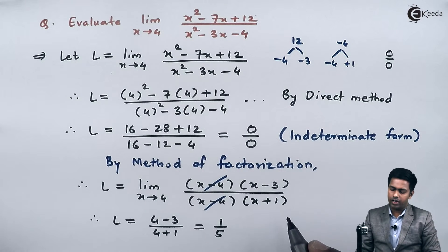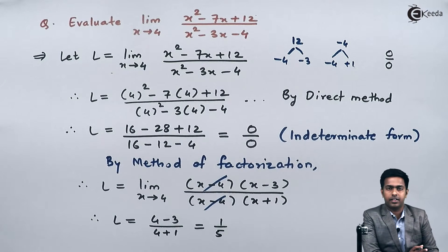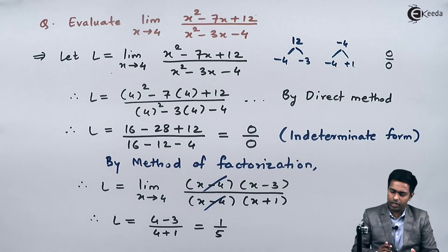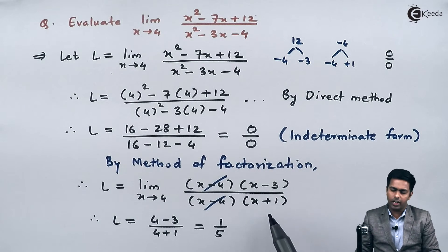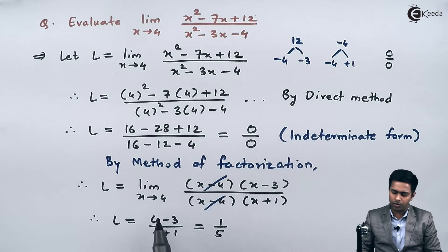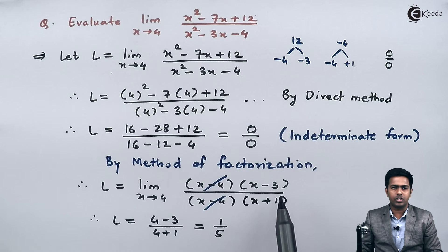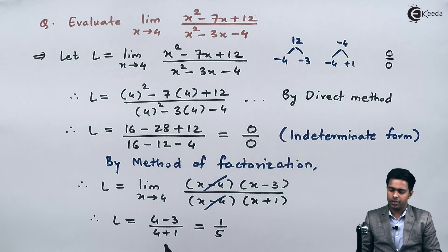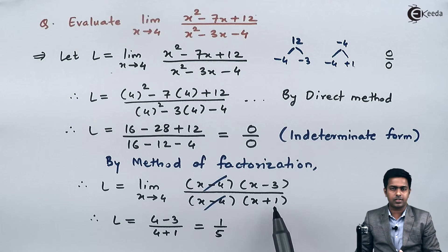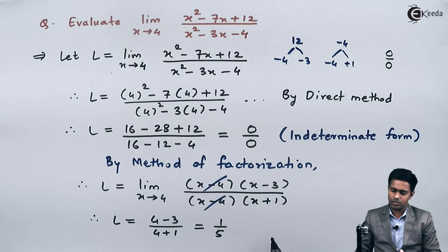After finding the factors we cancel the common factors from numerator and denominator, and for whatever term remains we again apply the direct method, substituting the value directly. After substituting 4, in the numerator we get 4 minus 3 and in the denominator we get 4 plus 1, and hence the answer is 1 by 5.